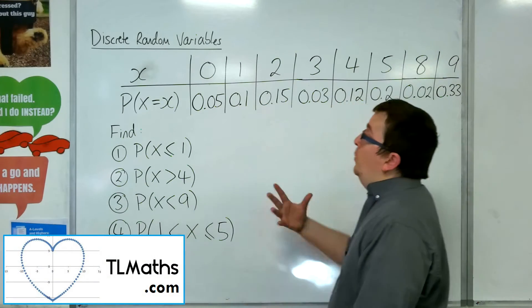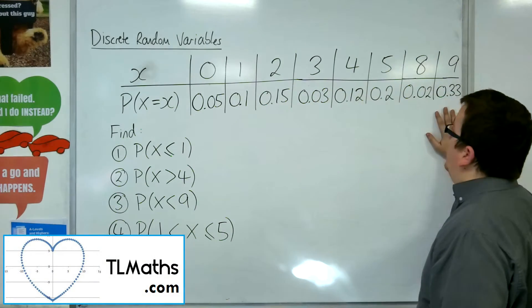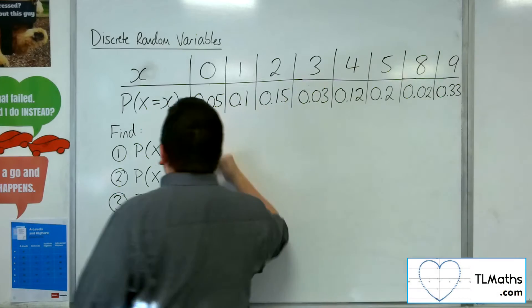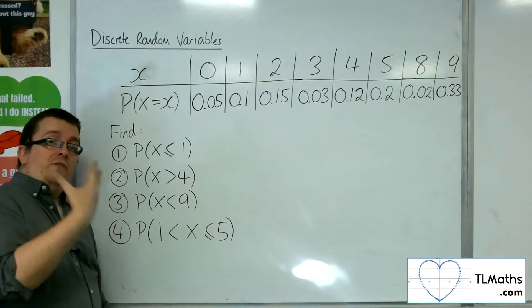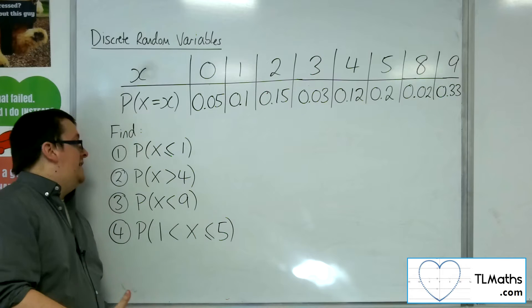Okay, so in this video, we've got a discrete probability distribution given to us, and we're asked to find these probabilities. So it's really reading off the values that we really need here.